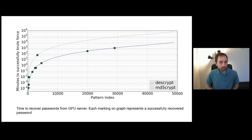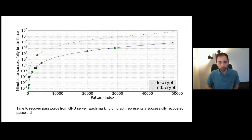This graph from the original paper shows the time to recover passwords from the GPU server; each marking represents a successfully recovered password. Essentially, this problem reduces to basic password security concepts. Virtually all passwords are cracked within one minute, indicating weak passwords regardless of the hashing algorithm. Passwords hashed with MD5 crypt resulted in longer times to crack, as extrapolated in the graph, based on the number of computations the GPU can perform for each algorithm.